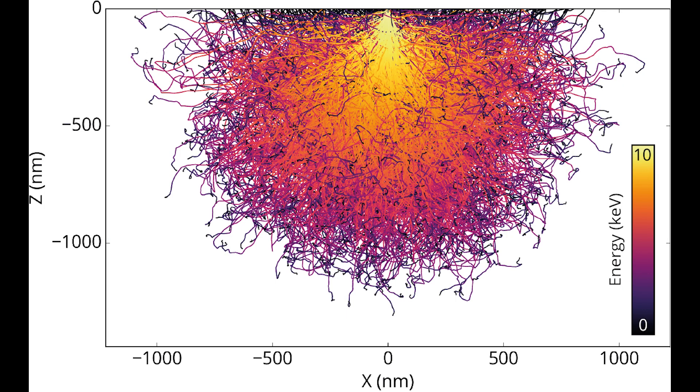So why do these orbitals matter? The way electrons fill these orbitals, starting with the lowest energy levels first, helps explain an atom's chemical behavior. When atoms bond to form molecules, it's the electrons in the outermost orbitals that interact.